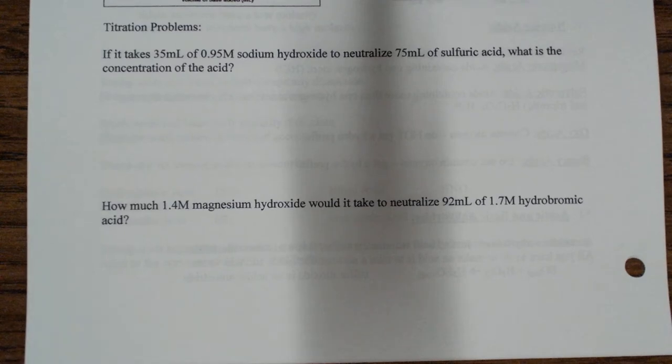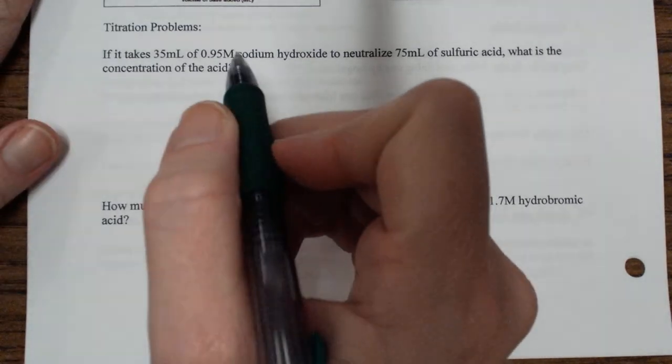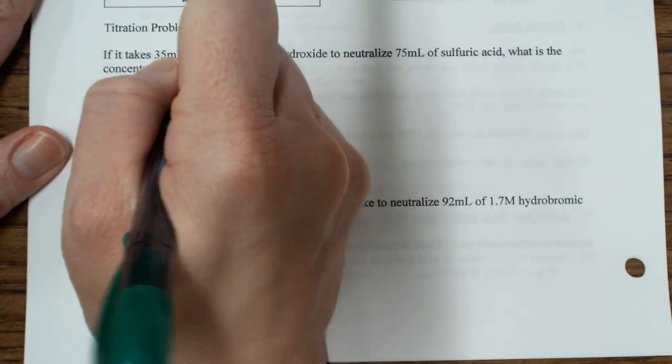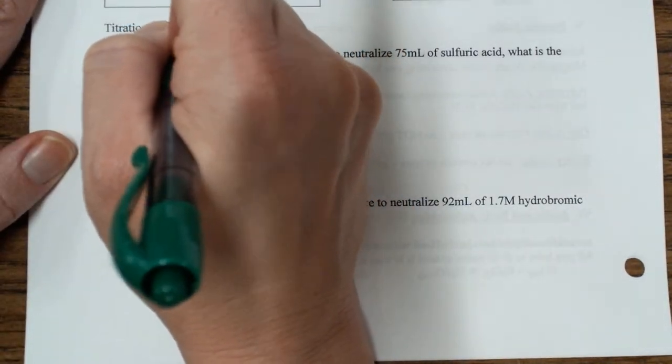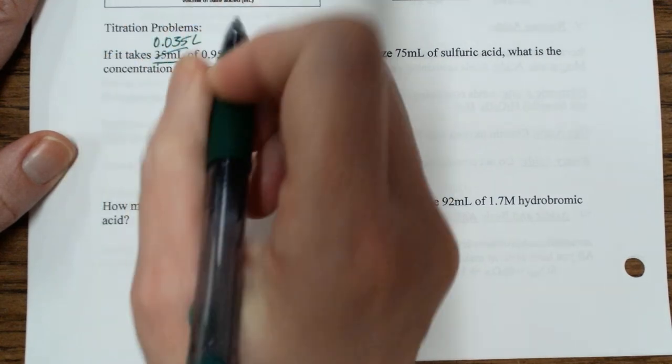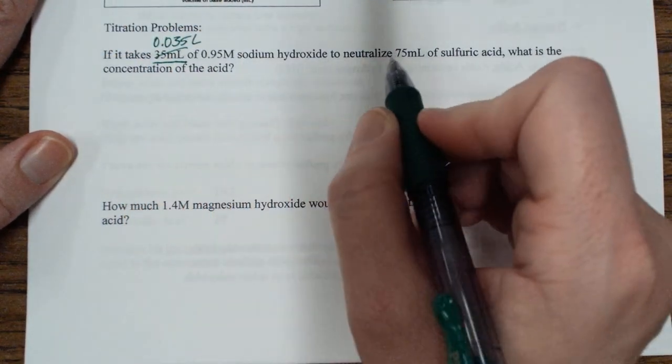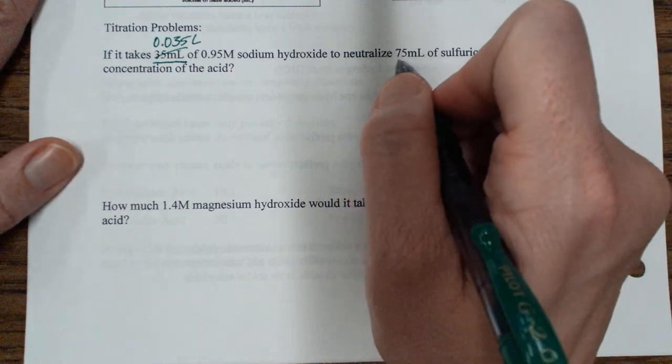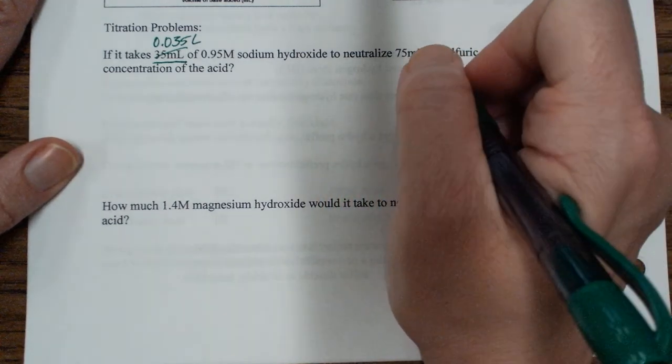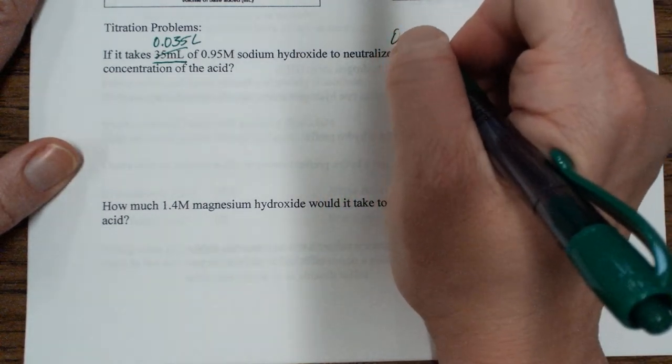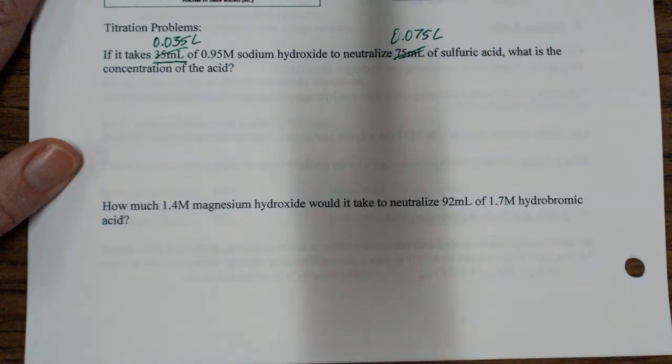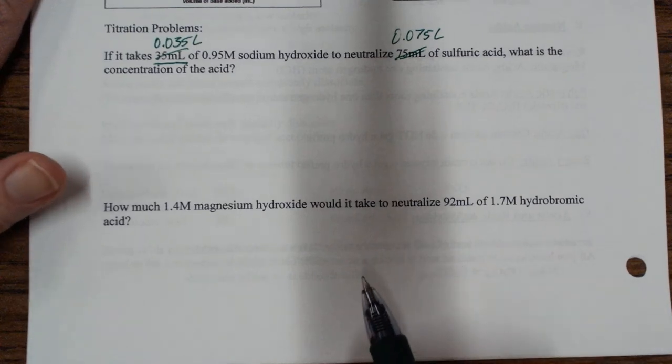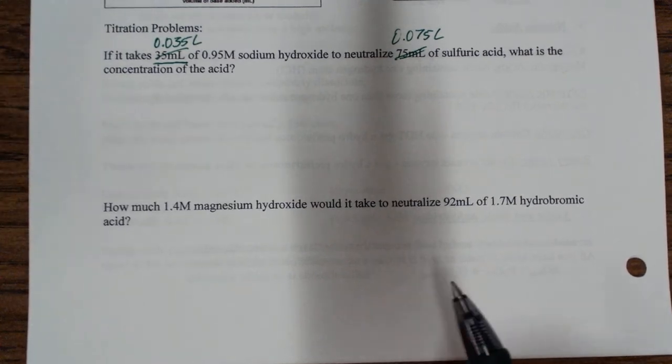I'm going to do a couple of example problems with you right quick. It takes 35 milliliters, we're not super keen on milliliters, so I'm going to change that to 0.035 liters of 0.95 molar sodium hydroxide to neutralize 75 milliliters, again not super keen on milliliters, I'm going to change that to 0.075 liters of sulfuric acid. What is the concentration of the acid? First of all, I have to write my balanced chemical equation because this is stoichiometry. The first step is to write a balanced chemical equation.